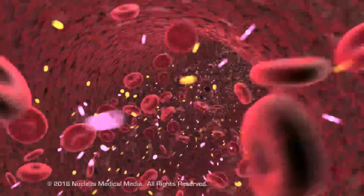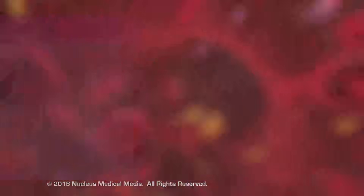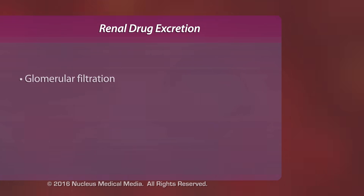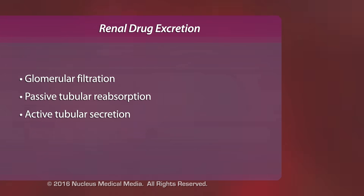Each component plays a role in renal drug excretion, a four-step process that allows the kidneys to filter and eliminate drugs from the body. These steps are glomerular filtration, passive tubular reabsorption, active tubular secretion, and excretion.